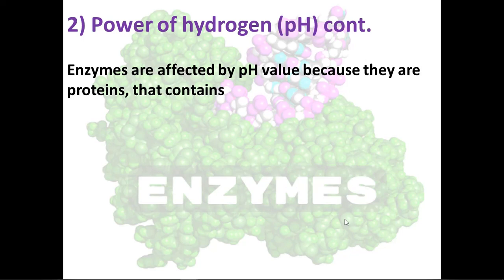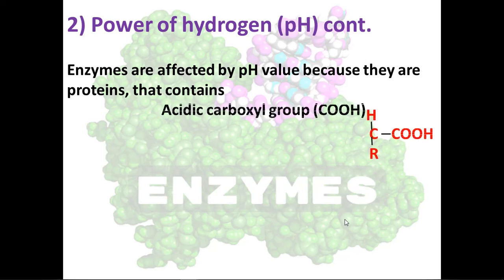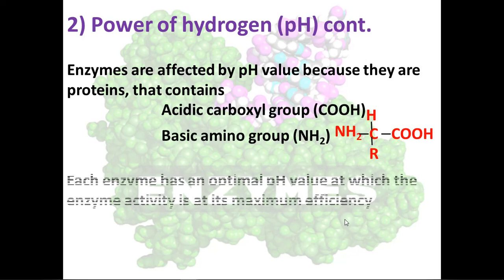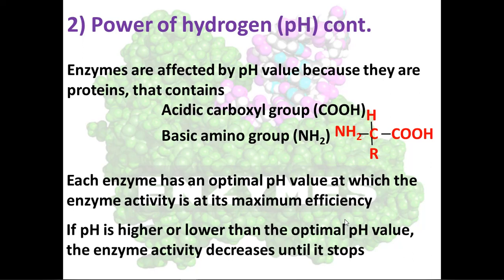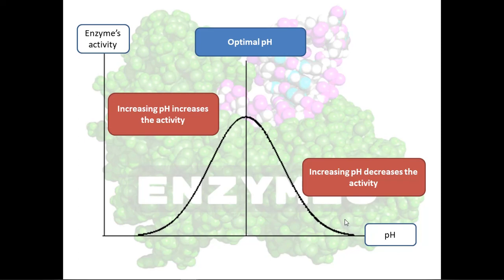So why are enzymes affected by pH? Remember the structure of a protein — it is made up of amino acids, where the amino group is a basic group and the carboxylic group is an acidic group. So proteins are affected by both bases and acids. Like temperature, each enzyme has an optimal pH at which the enzyme activity is at its maximum efficiency. If the pH is higher or lower than the optimal pH, the enzyme activity decreases until it stops. Also like temperature, the effect of pH is reversible within the active range.